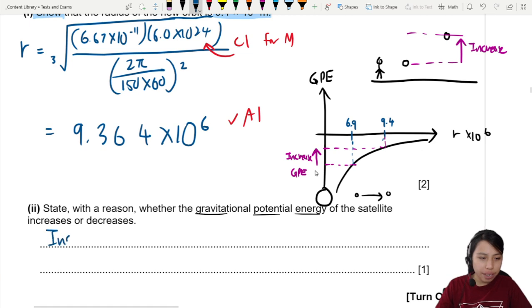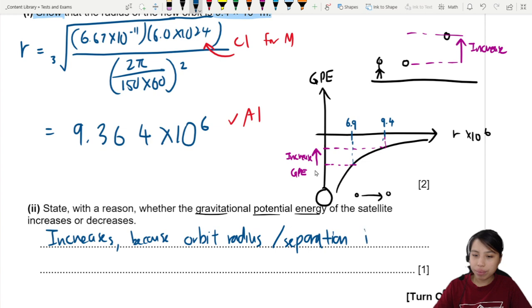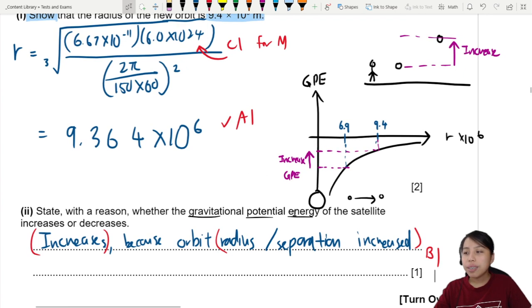So here we can say, what's the answer? Increases. Why? You say because the orbit radius, or you can say because the separation increases. I'm looking for GPE increase. Why? Because radius or separation increase. B1.